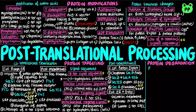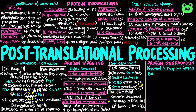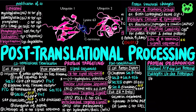Bacterial proteins are degraded by ATP-dependent lon protease, which is activated by defective proteins or those with rapid turnover. Two ATPs are hydrolyzed per peptide bond cleaved. In eukaryotes, ubiquitin-dependent proteolysis typically degrades defective proteins and those with characteristically short half-lives by recognizing polyubiquitinated proteins.